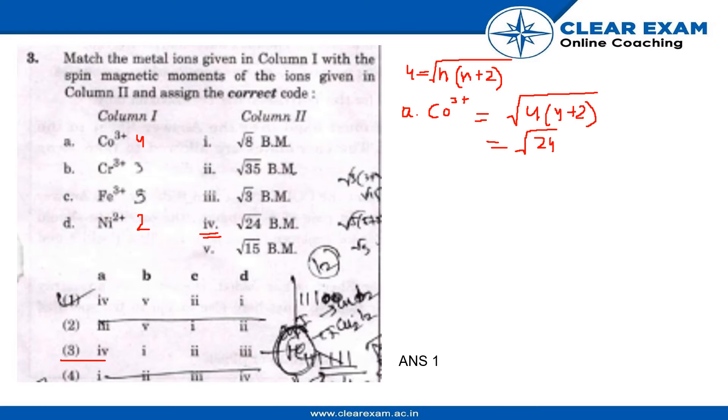Two questions have A as 4, so the answer will be between these two. Now let's calculate for Cr³⁺. It will be 3 times (3 plus 2), so the magnetic moment will be under root 15. It is the fifth option, so 4 then fifth. The answer will be option 1.